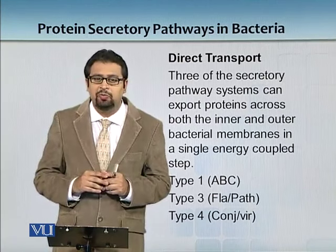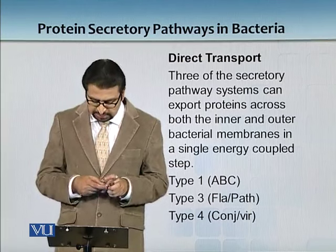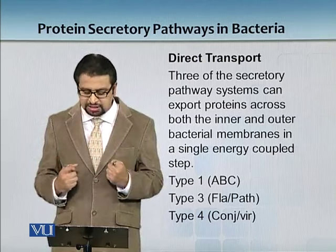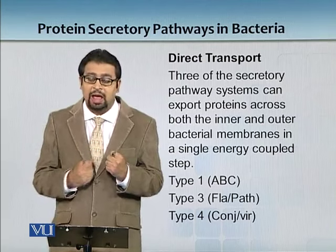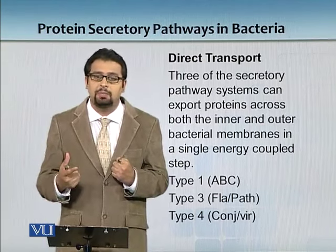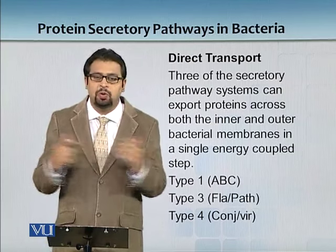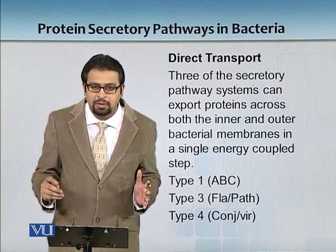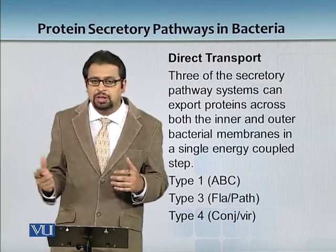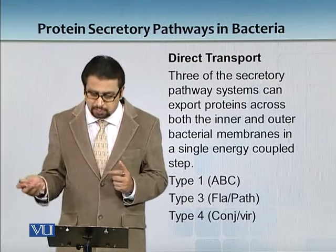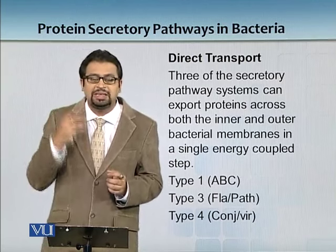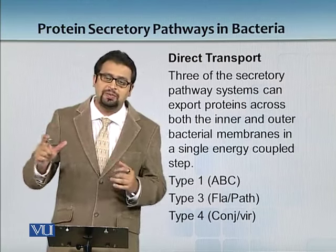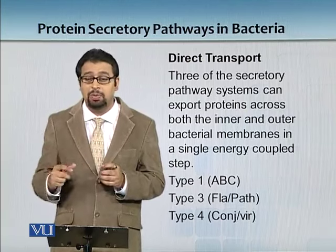There are certain systems which account for direct transport. The secretory pathway systems can export proteins across both the inner and outer bacterial membranes in a single energy-coupled step. Jis tariqe se you have to pay salary of a chaukidar jo aapke ghar ke bahar khada hota hai — usi tariqe se these proteins don't work without taking money, and the money inside the cell is energy, an energy expenditure, and that is ATP. So the currency of the cell is ATP — well, it can be GTP as well, but mostly ATP. Types 1, 3, and 4 are basically the ones which can transport, which can traverse the protein across both inner and outer membranes in a single step.